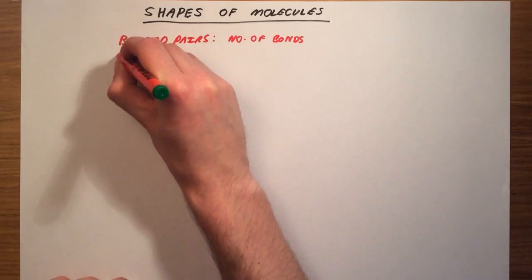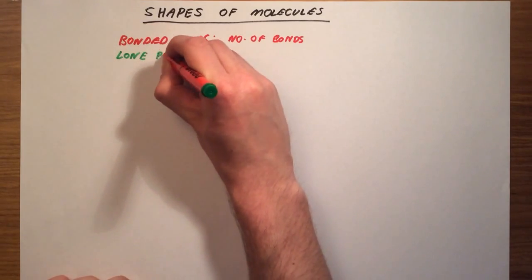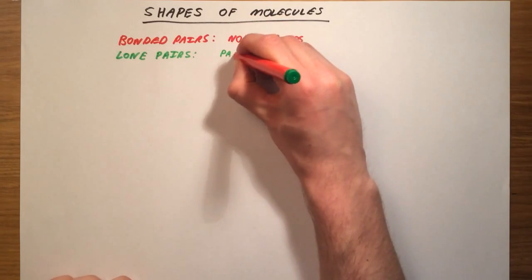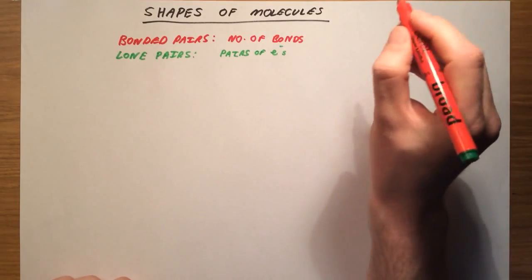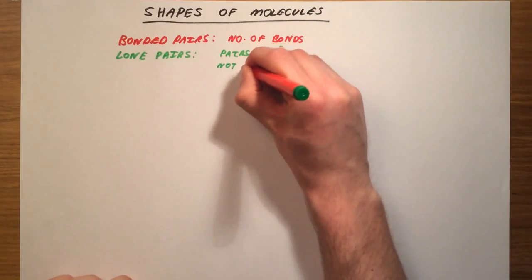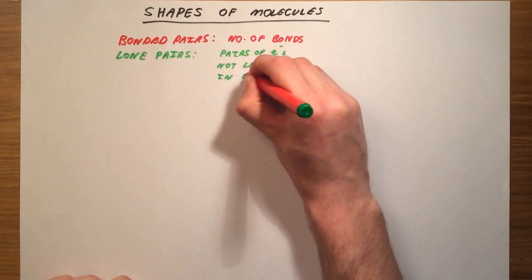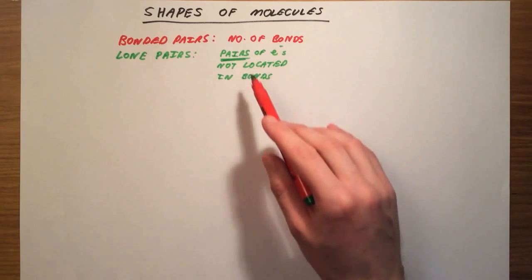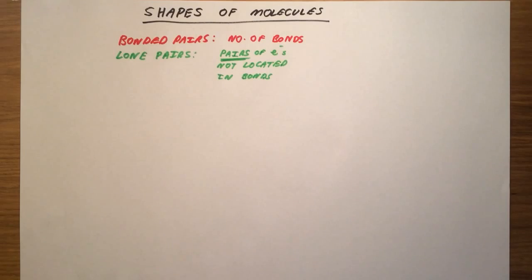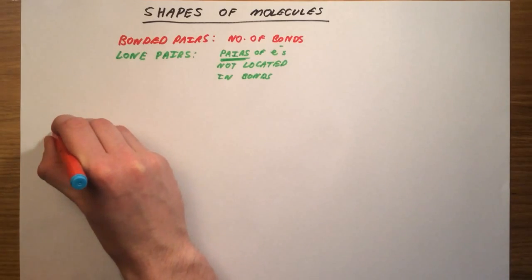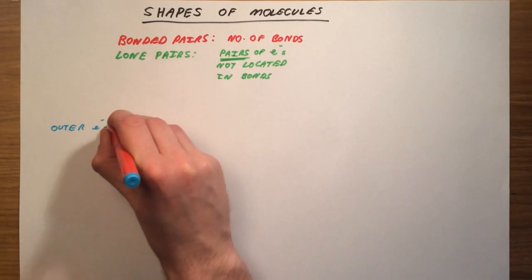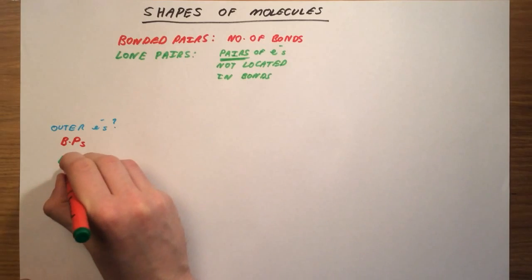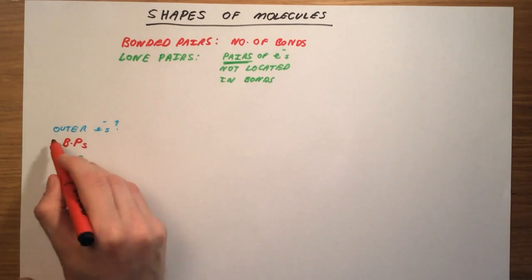Once we've done that, we then need to work out the number of lone pairs of electrons about the central atom. This is a little bit more difficult, because now we do need to take account of any double or triple bonds. Lone pairs are pairs of electrons that are not located in bonds — and I'll emphasise the pairs, because a common mistake is to count up single electrons. A lone pair has to be a pair of electrons. I'm going to set up a table: the number of outer electrons an atom has, the number of bonded pairs, and the number of lone pairs, which allows us to work out the shape.